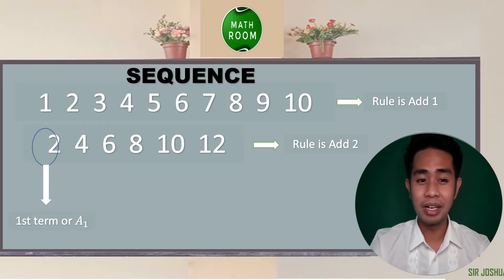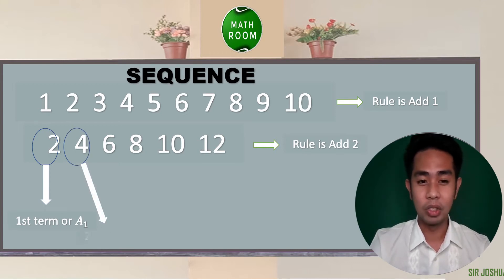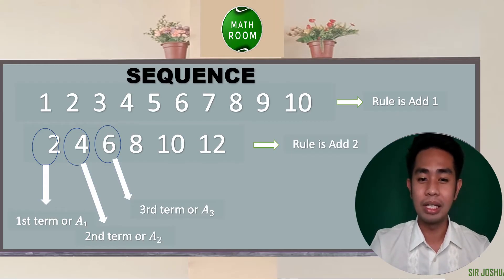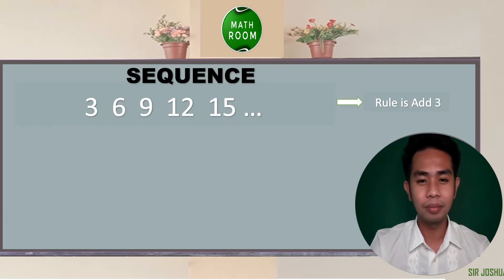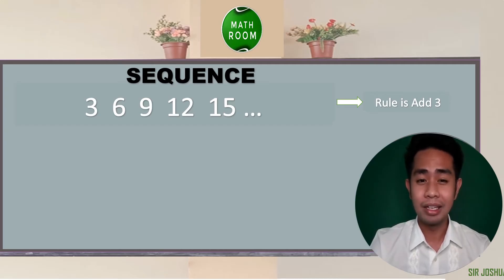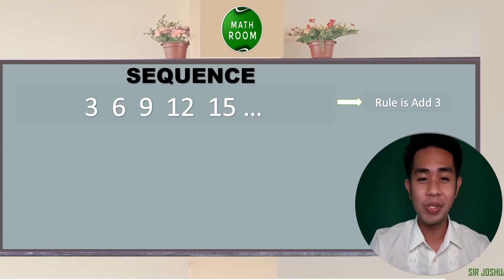The first number is our first term, or a sub 1. The second number, which is 4, is our second term, a sub 2. The third number is a sub 3, and the sixth number is our sixth term, denoted by a sub 6. Let's look at this sequence: 3, 6, 9, 12, and 15. The rule is add 3, since we add 3 to each term to get the next term. 3 plus 3 gives 6, 6 plus 3 gives 9, 9 plus 3 is 12, and 12 plus 3 is 15.